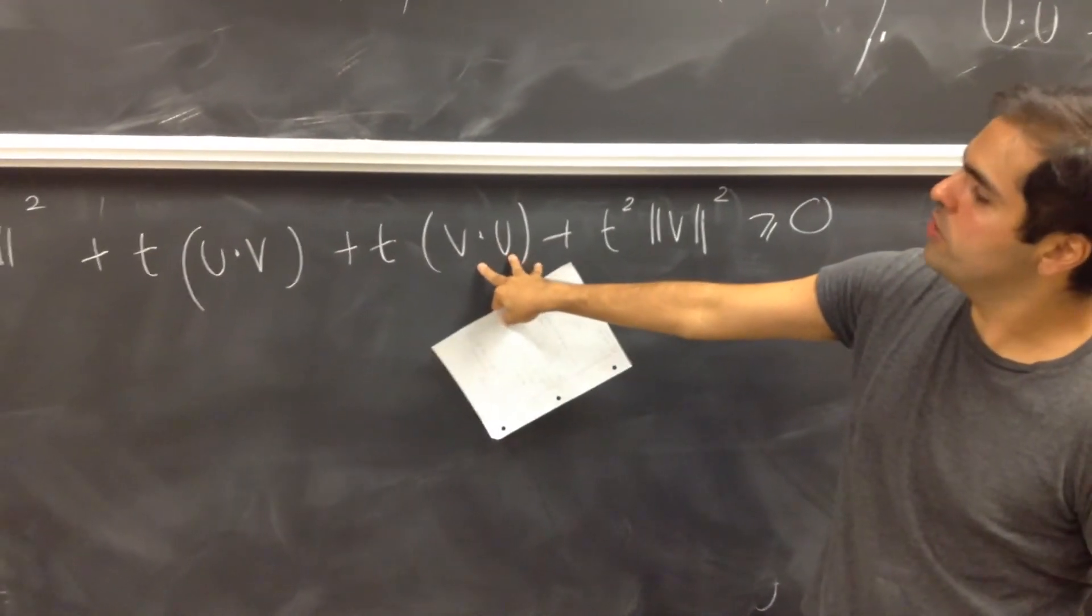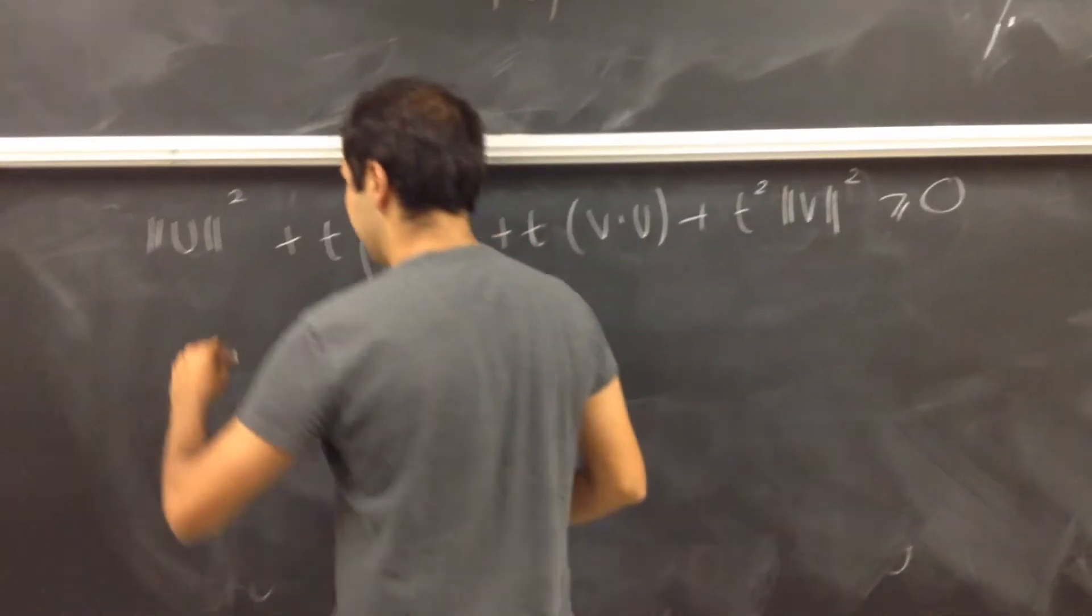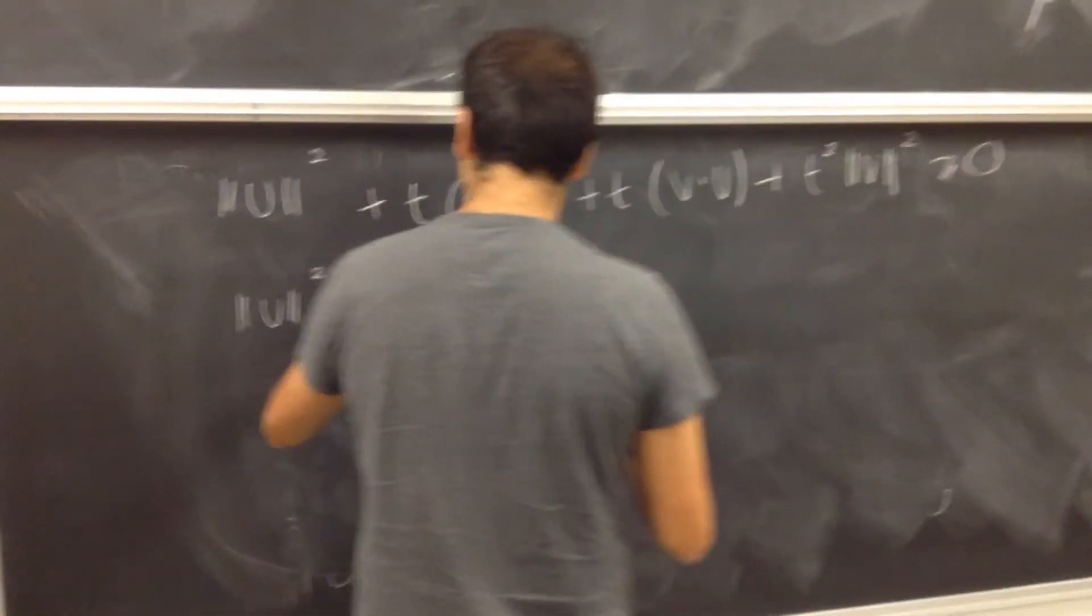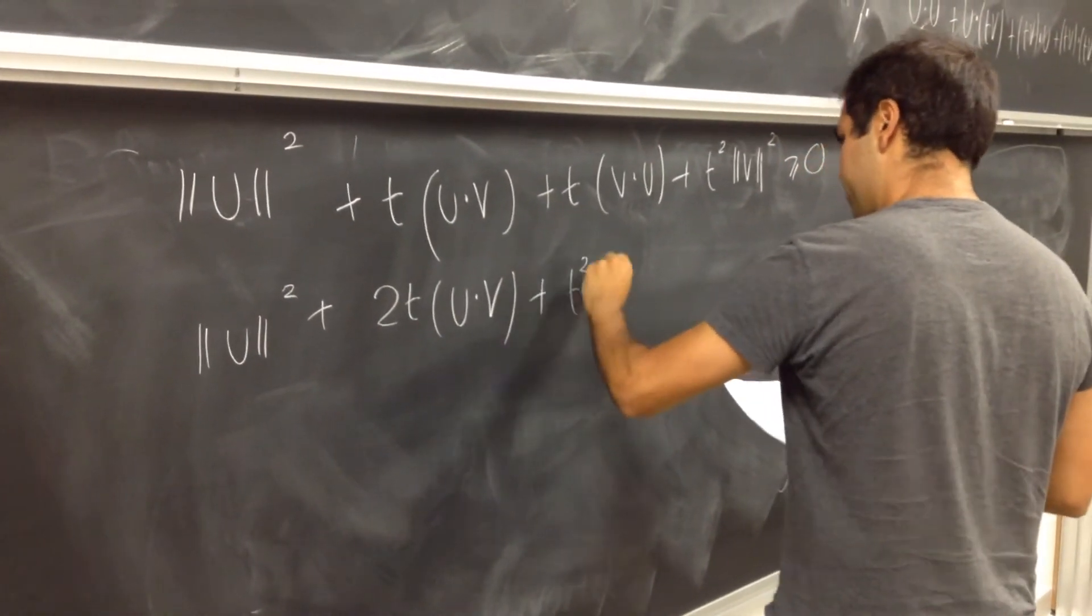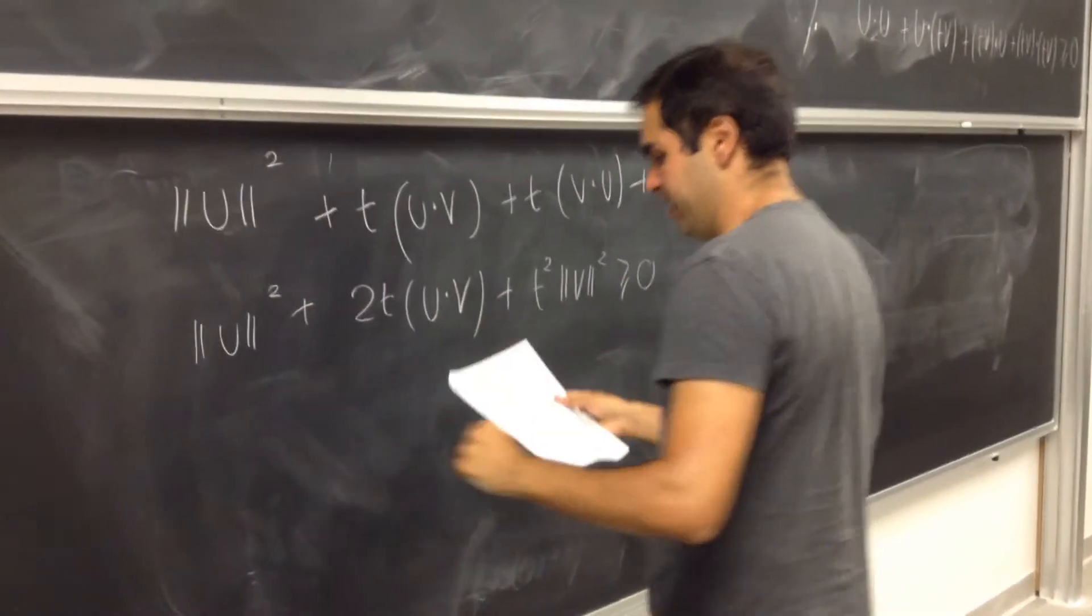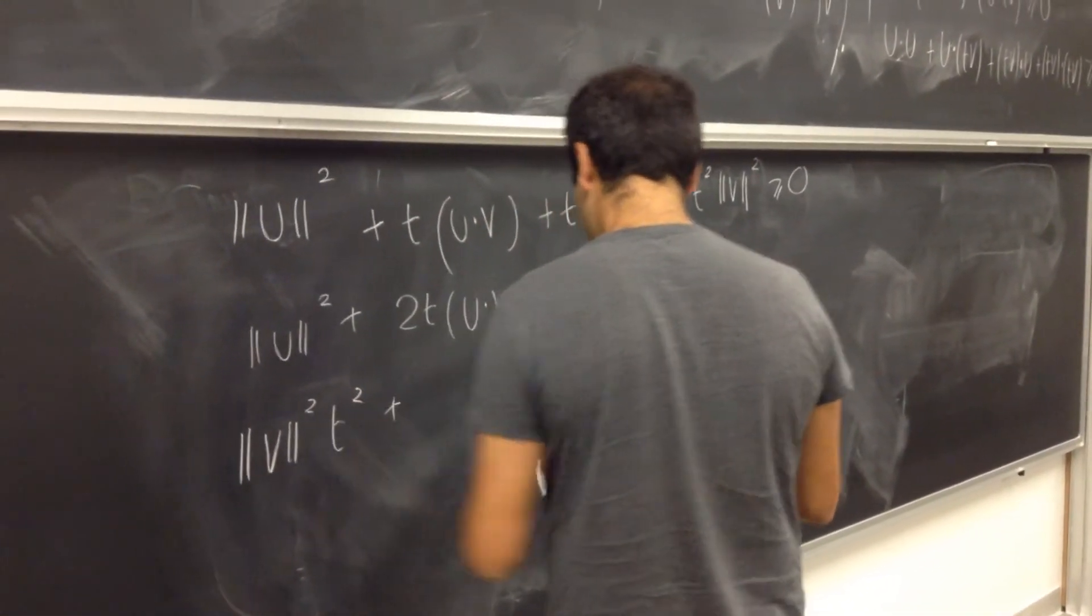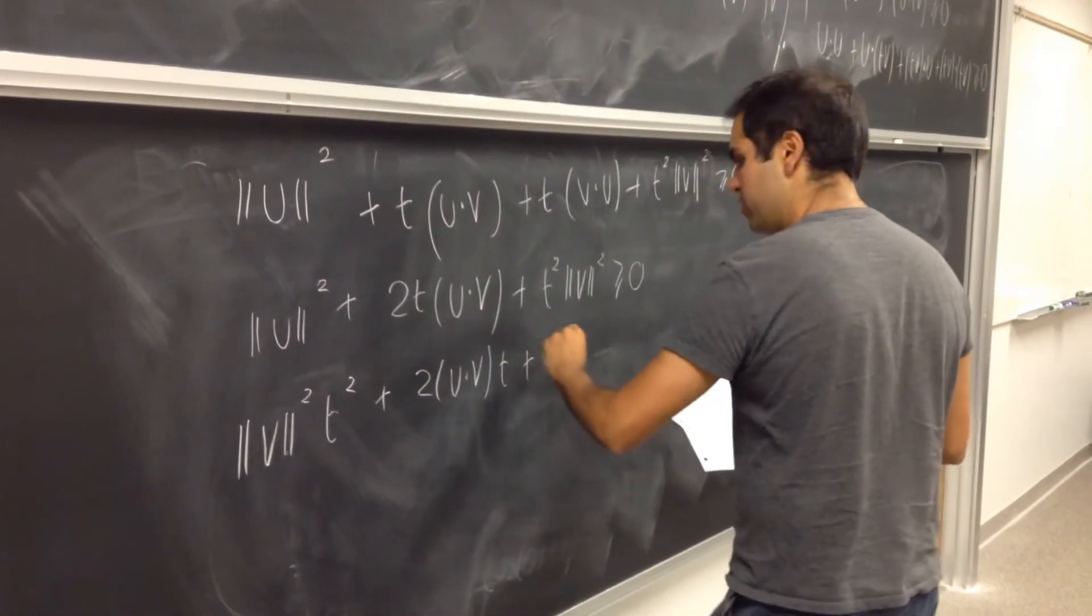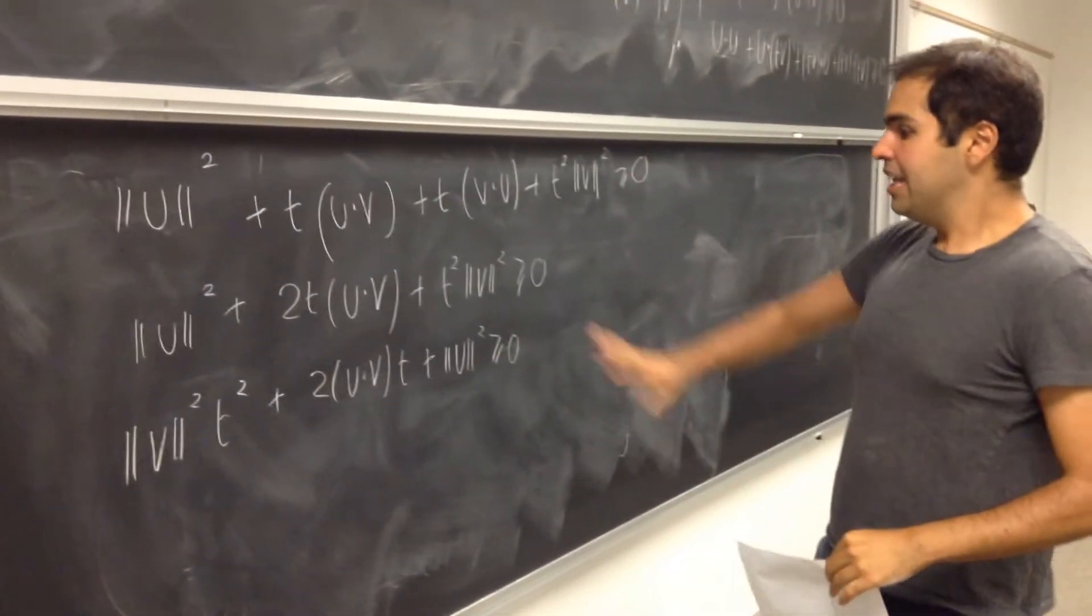Last but not least, again, because we're working with real numbers, v dot u is just u dot v. So in the end, you get u squared plus 2t u dot v plus t squared v squared. It's greater or equal to zero. So let's just rearrange this a little bit. So, v squared t squared plus 2 u dot v t plus u squared is greater or equal to zero. And that's actually great. It looks very complicated. But,